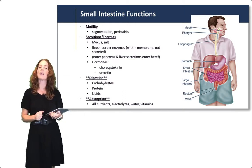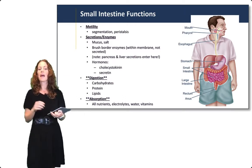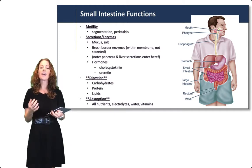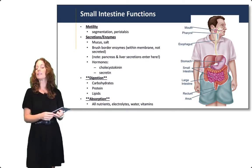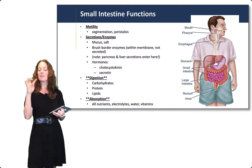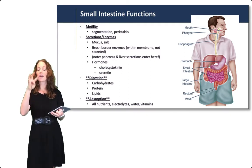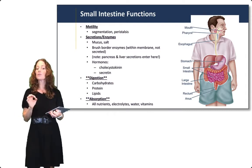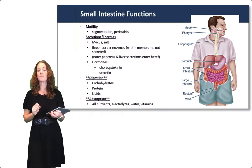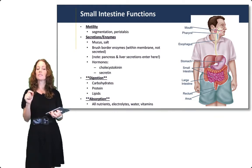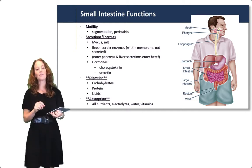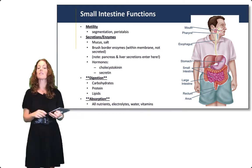The small intestine has two main types of motility: peristalsis and segmentation. It also contains a lot of secretions and enzymes. It secretes mucus and salt solutions. It has brush border enzymes — not technically secreted because they're stuck on the membrane — but very important for that last step of small molecules getting across the small intestine. It secretes hormones cholecystokinin and secretin, and it also contains a ton of secretions from the pancreas and the liver. Those secretions enter through the duodenum, the early part of the small intestine, and are absolutely critical for the digestive functions within the small intestine.